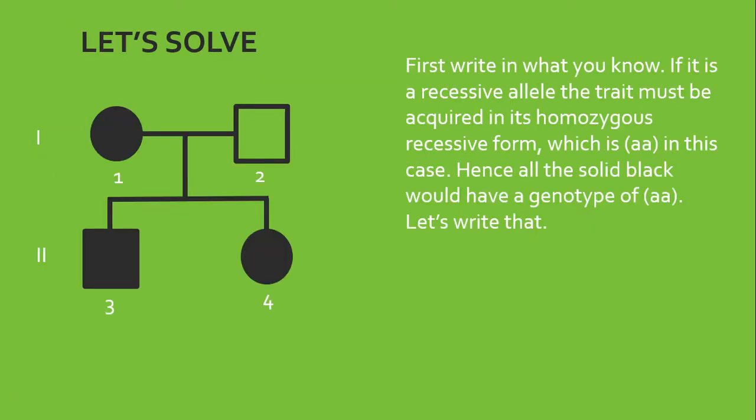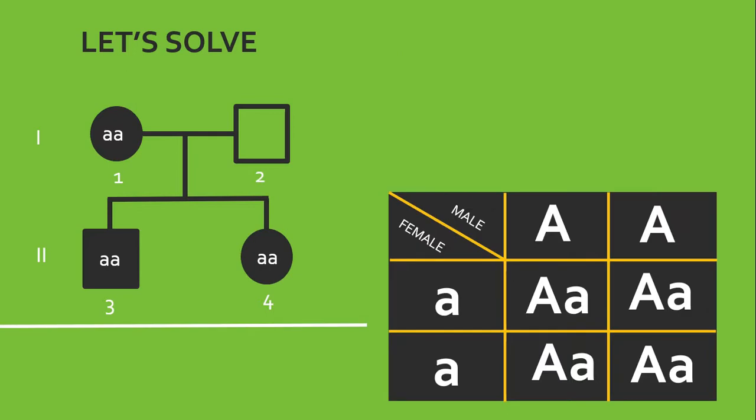Let's solve. First thing you need to do is to write in what you know. If it is a recessive allele, the trait must be acquired in its homozygous recessive form, which is two lowercase a's as it were for this case. Hence, all the solid black would have a genotype of aa. Let's write the all lowercase a's. Good. So, we know that these three individuals, they would have attached earlobe.